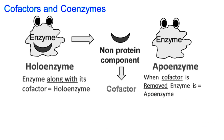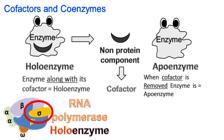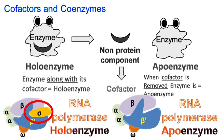The same is true for RNA polymerase. The RNA polymerase requires the sigma factor for its function. The RNA polymerase along with the sigma factor is called a holoenzyme, while the RNA polymerase without the sigma factor is called an apoenzyme.